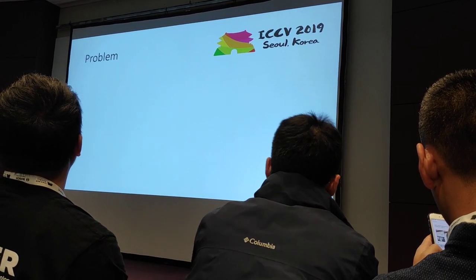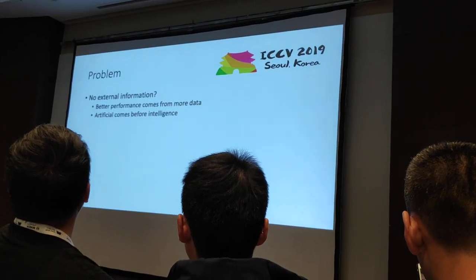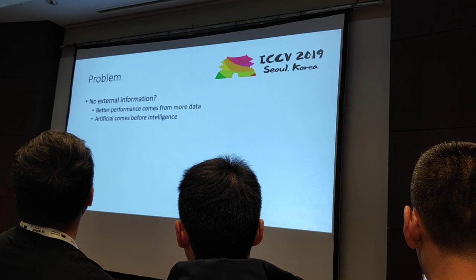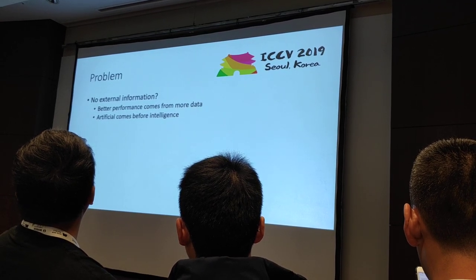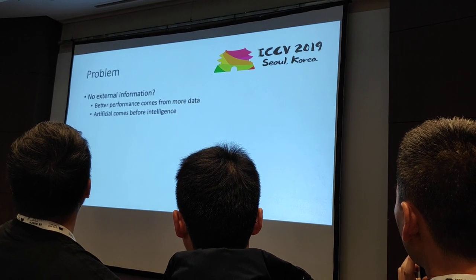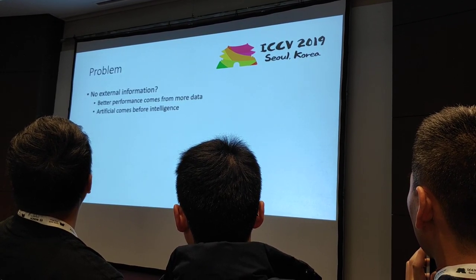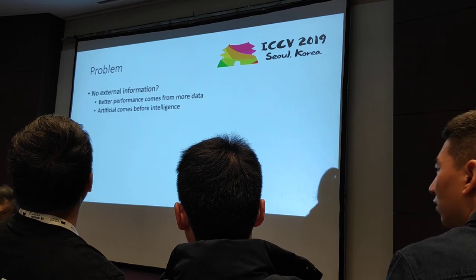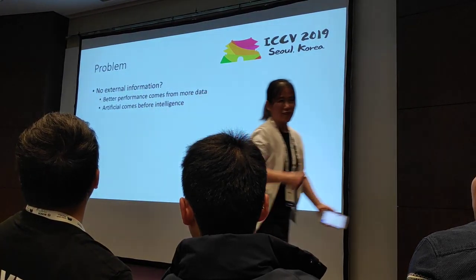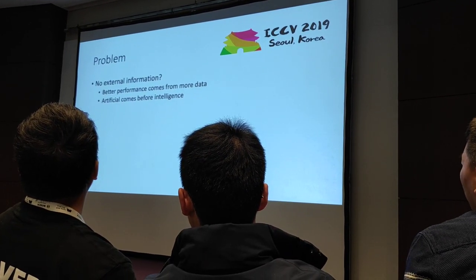In this challenge we face some problems. The first one is that we don't have external information. Because in the conventional way of thinking about how to improve the performance of a neural network, we have more data and we get better performance. And the artificial always comes before the intelligence — that's how we call it artificial intelligence.